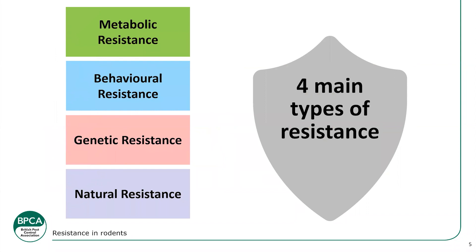There are four types of resistance — we're going to talk about two of them today. First, metabolic resistance: this involves the P450 enzyme, which breaks down the active ingredient before it has time to take effect. This group of enzymes are classed as super proteins and are used to metabolize drugs and toxins within the liver and intestine. It hasn't been looked into in too much detail within rodents yet, though French researchers have started identifying where metabolic resistance occurs and with which strains.